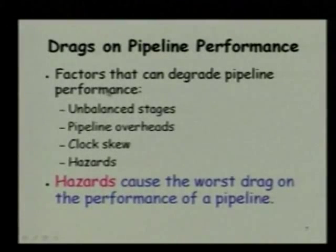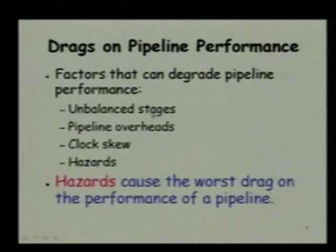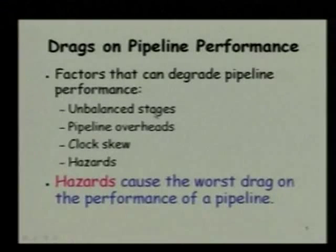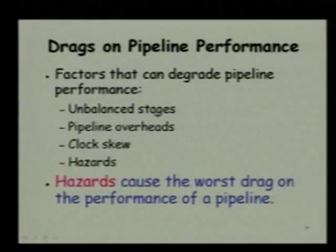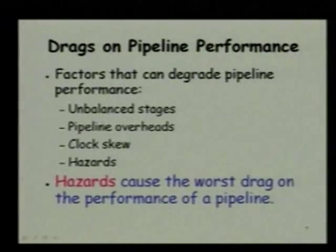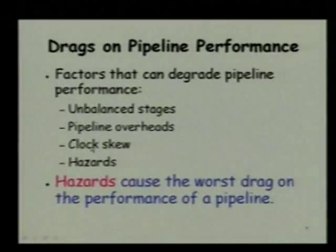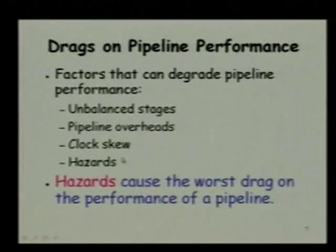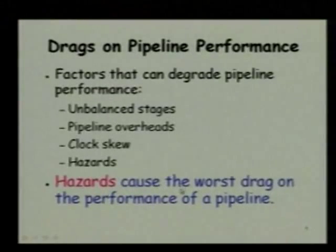The factors that can drag down the performance of a pipeline are unbalanced stages. It is very difficult to balance the different stages of a pipeline — any hardware designer will tell it is really, really difficult. Different manufacturers organize their instructions into different number of stages each doing very different types of work, but still they are not really balanced. Then we have the pipeline overheads — the setup time, pipeline registers, clock skew — but the biggest thing out of all these is the hazards, which is the biggest drag on the performance of the pipeline.